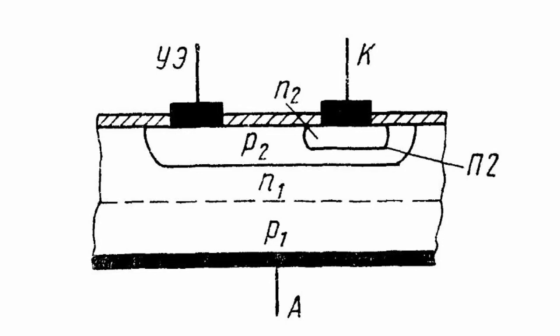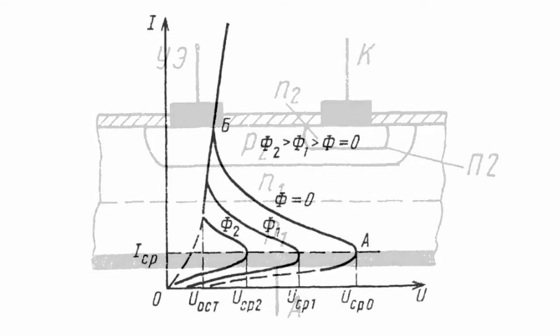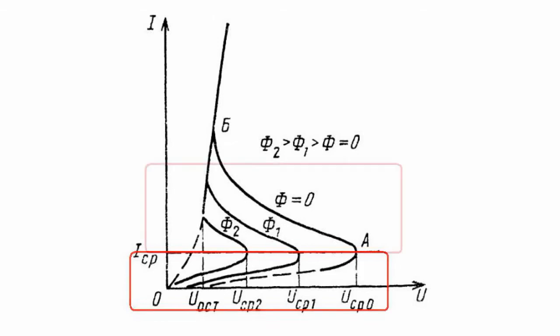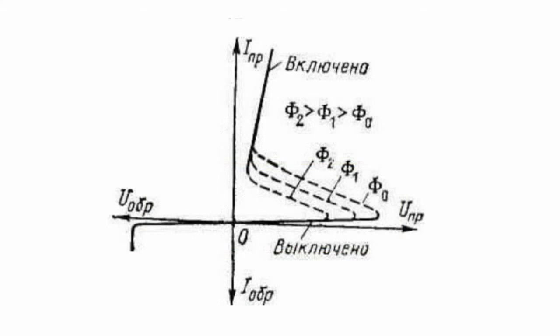It may be in one of two states according to an operating point: below operating current — closed, or above the operating current — open. Opening and closing of the photothyristor using a light control signal is provided by a current jump when the operating current is reached.